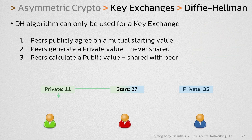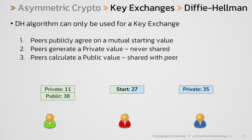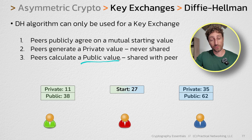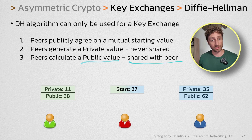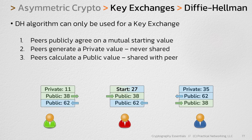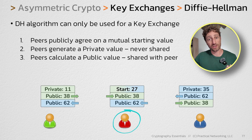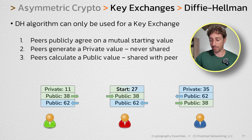The green user is going to add 27 with its private value of 11 to get a result of 38. The blue user is then going to do the same thing — they'll add 27 plus 35 to get the value of 62. Since this value is public, it's meant to be shared across the wire to the peer. So the green user will share 38 and the blue user will share 62. Now our red user, acting as our man in the middle, saw these values as they crossed the wire, which means the red user also has a copy of 38 and 62.